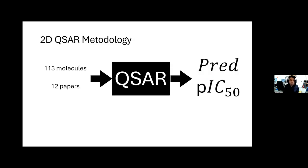For our model of the 2D QSAR, we took 130 molecules from 12 papers, then made the QSAR equation, calculating different descriptors with Padel software, then the statistical analysis with Minitab software, and then predicted the pIC50 of different molecules.